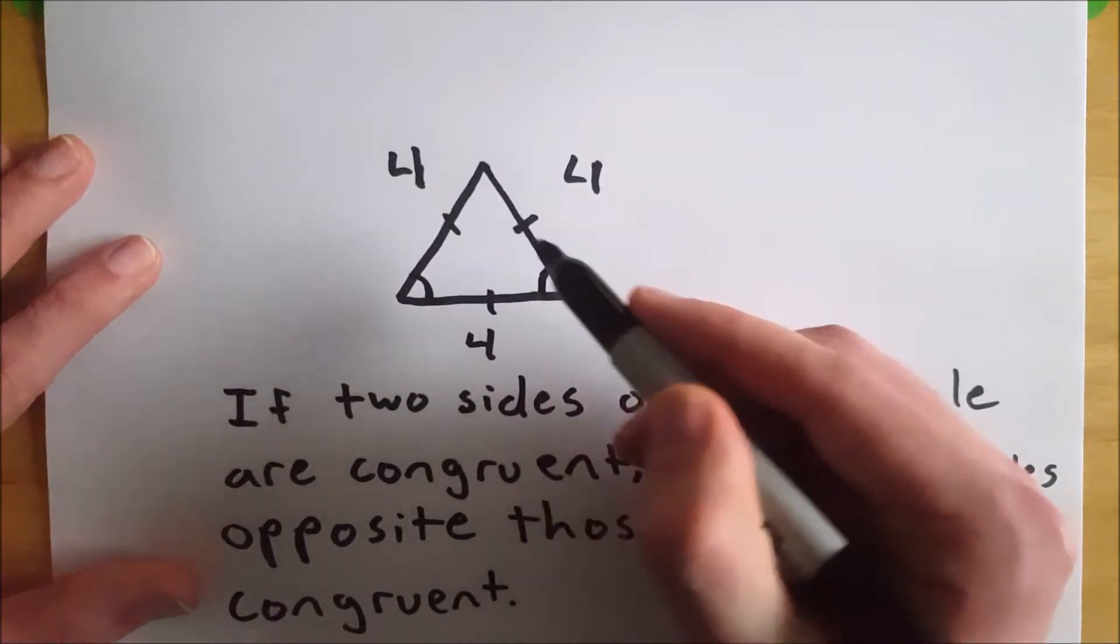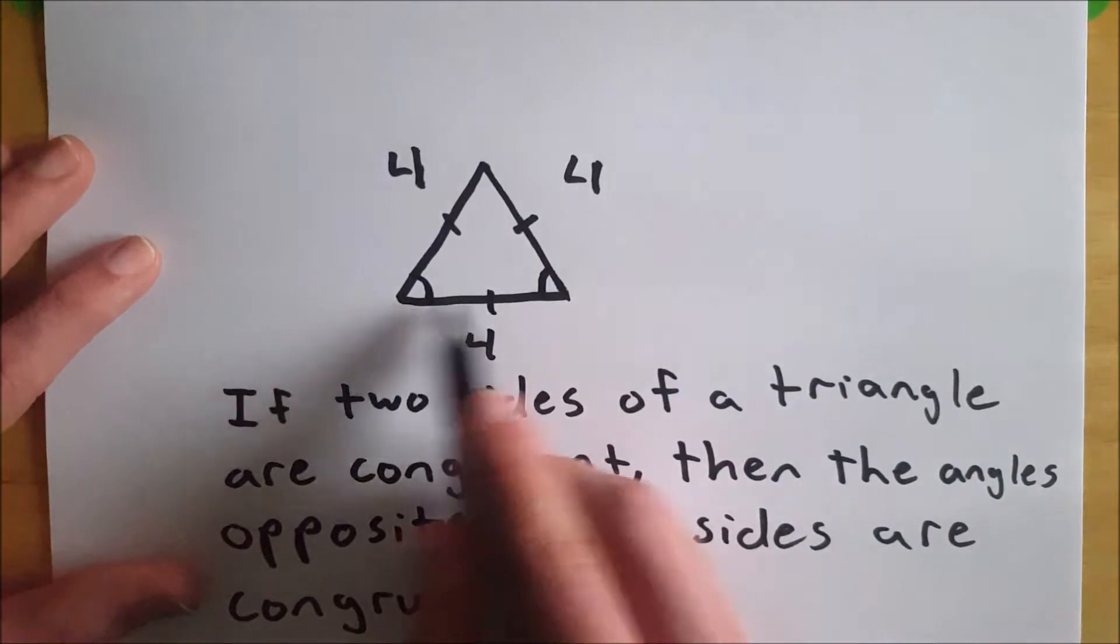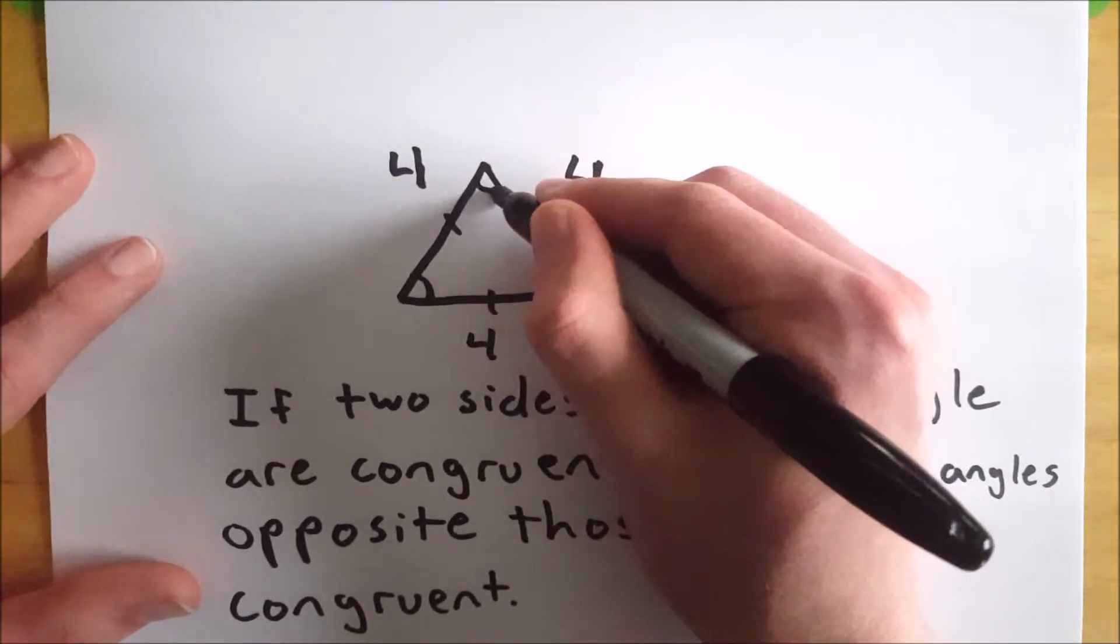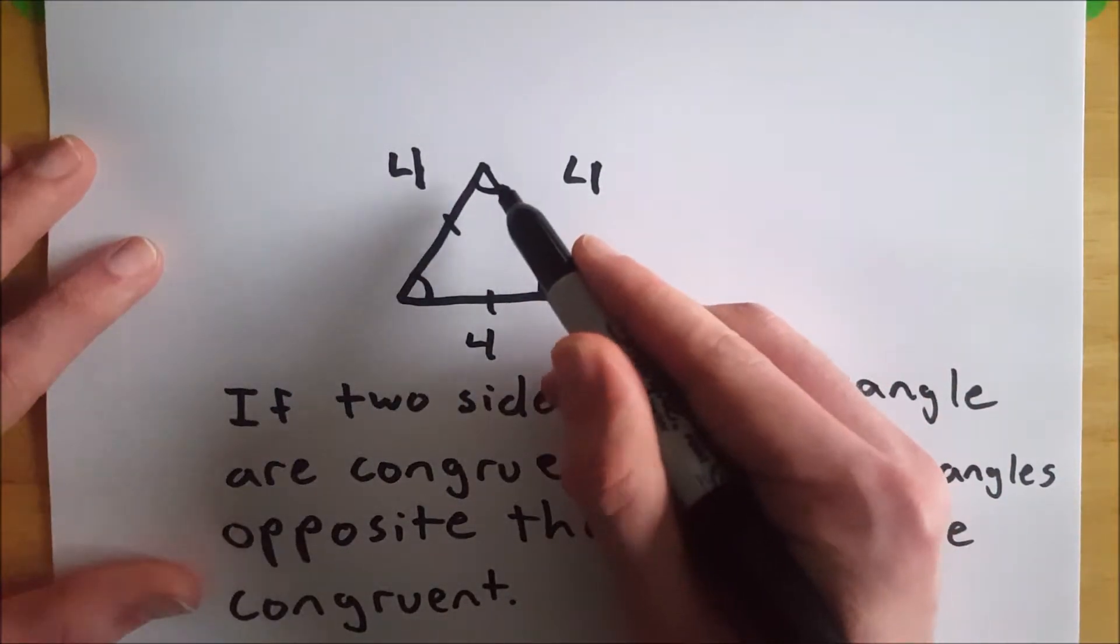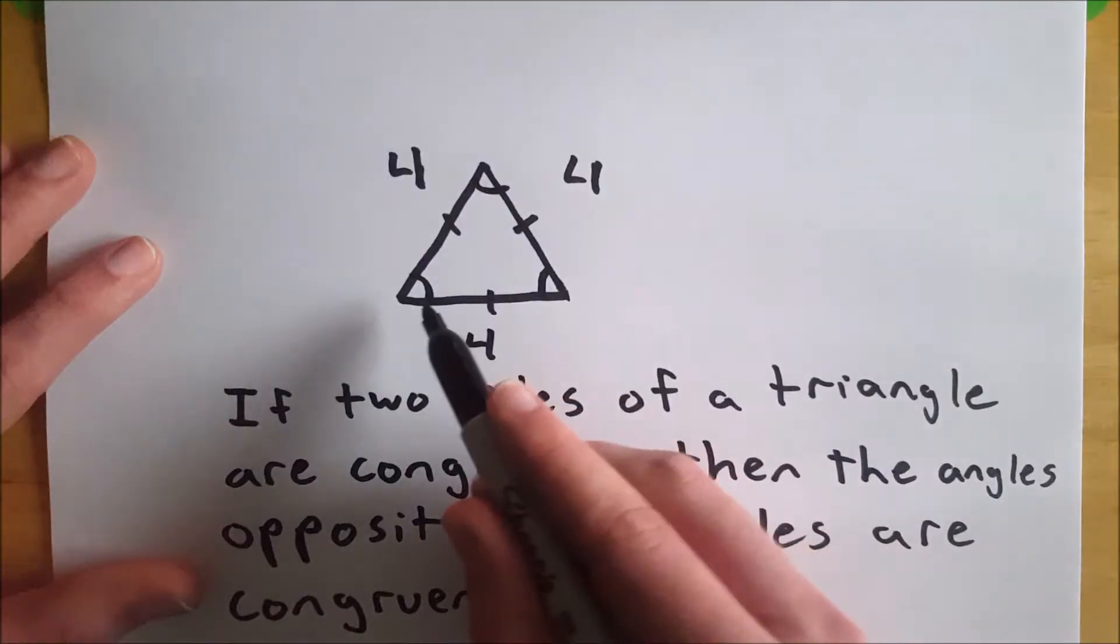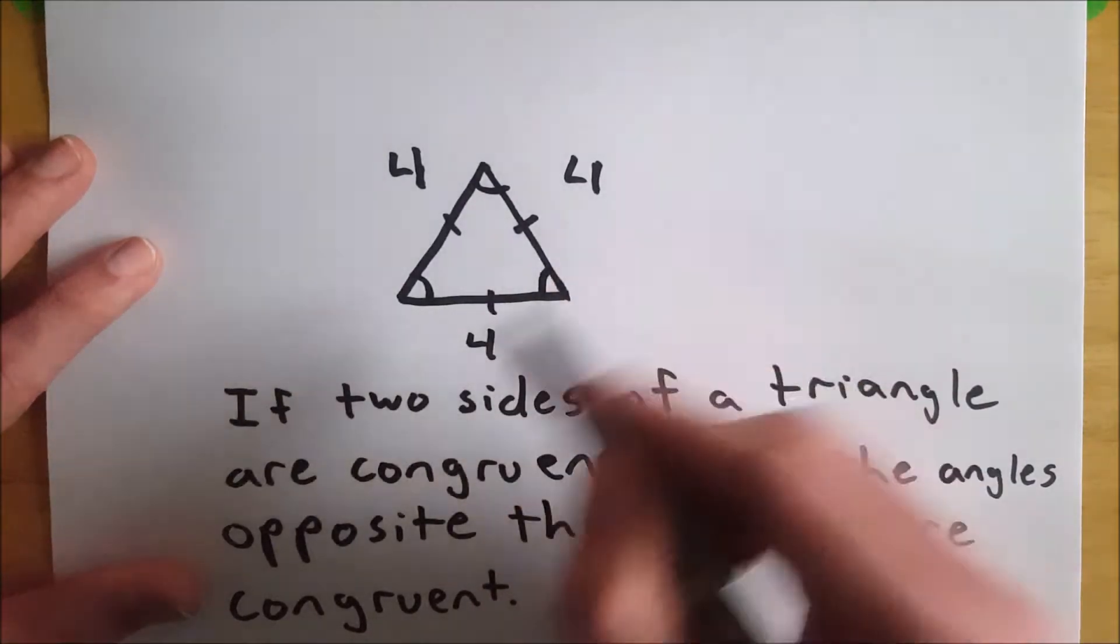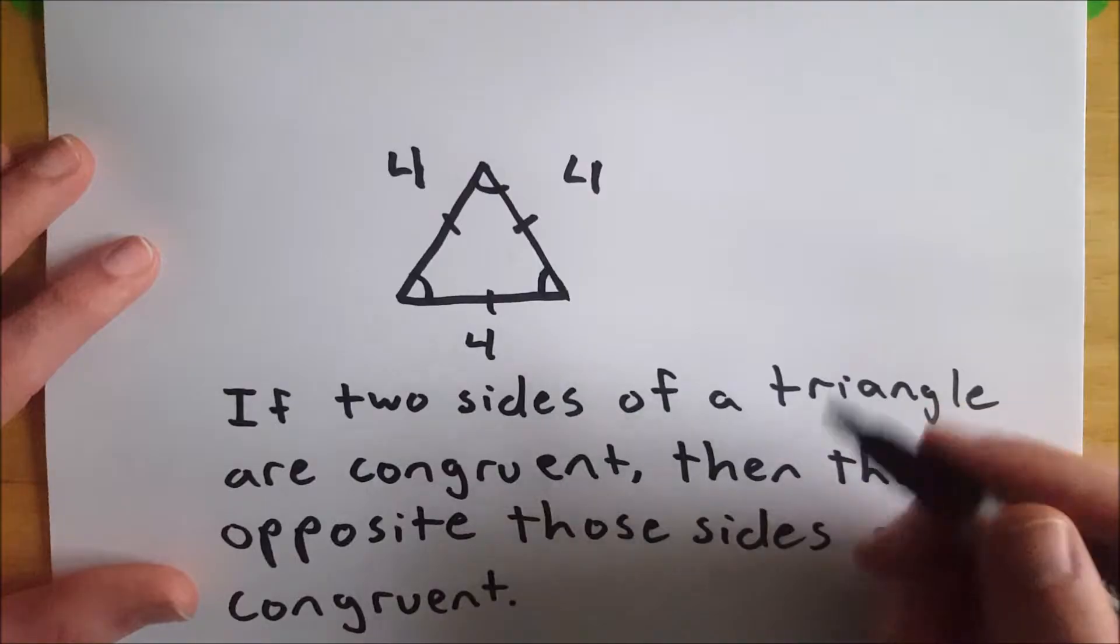The angle opposite this side is this angle, and the angle opposite this side is this angle. So therefore, this angle is congruent to that angle. We already knew that that angle was congruent to that angle. So therefore, all of the angles are congruent.